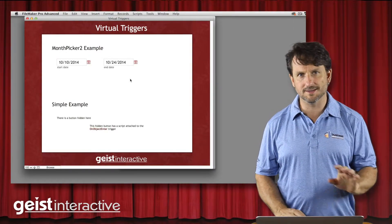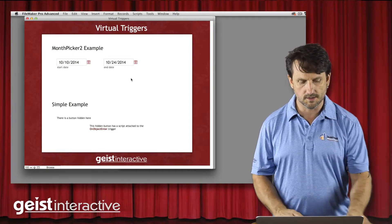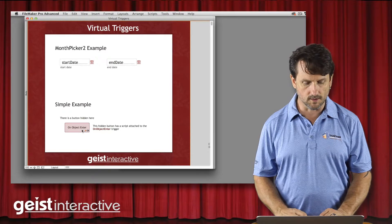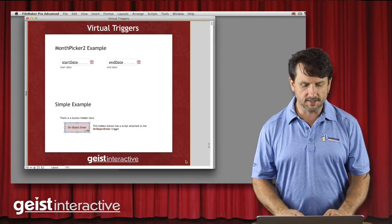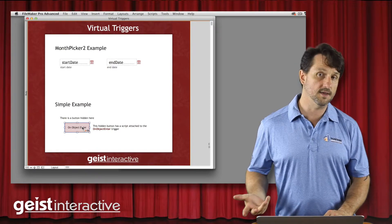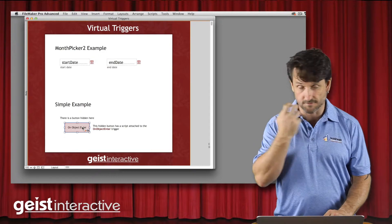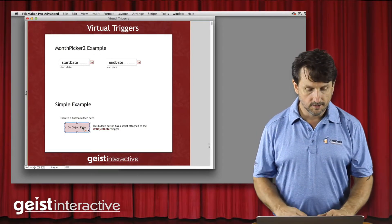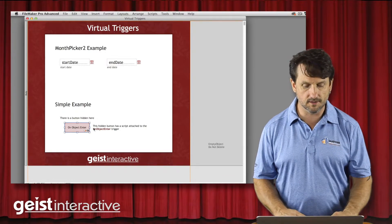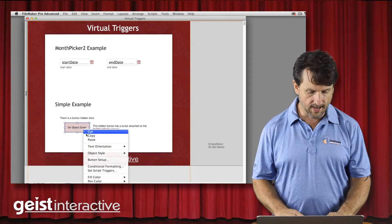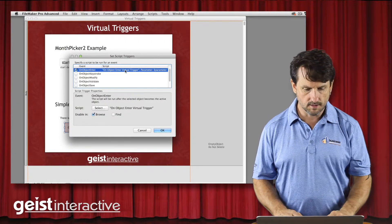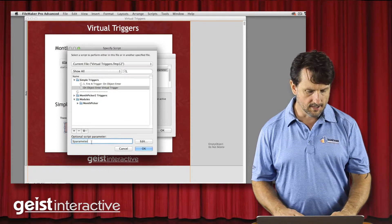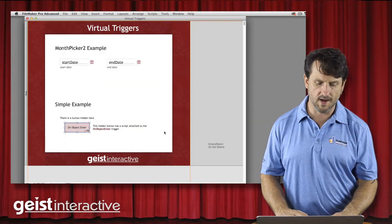You can download this file and dig into that example and pull it apart. But it's a bit more complicated, so now I want to show something very simple to see how it works under the hood. The first interesting thing is that buttons with on object script triggers can be hidden and still function fine — you can still target them with the go to object script step and it will still fire the script trigger. So you can have a button anywhere on the layout, hidden or off screen. This button has an on object enter script trigger running a script called on object enter virtual trigger, and we're passing a single dollar sign variable called parameter.